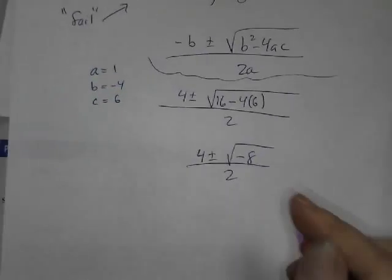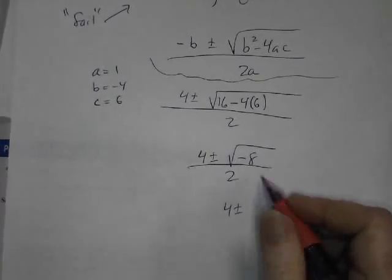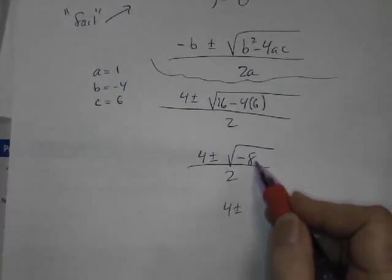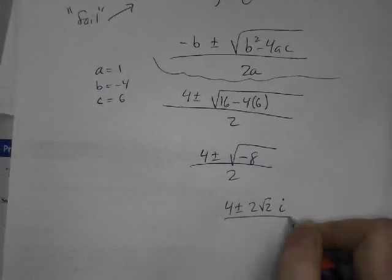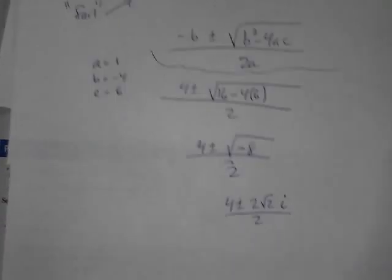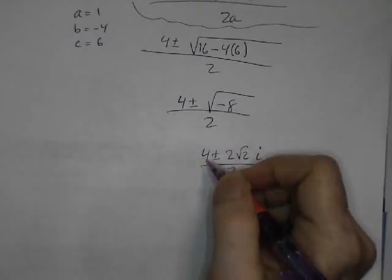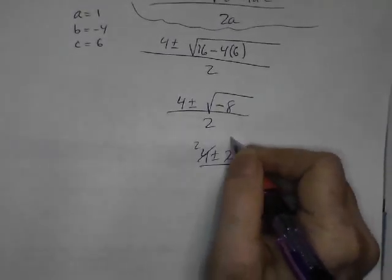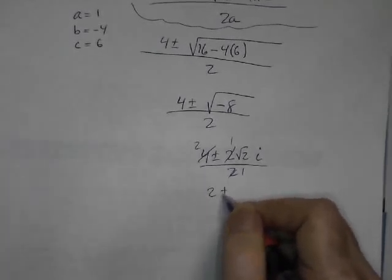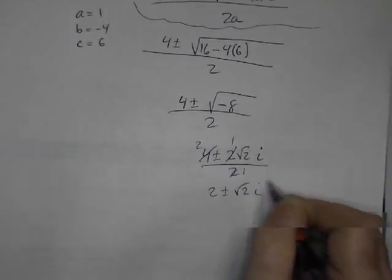Now, negative 8, you know that this is going to be... 8 can be written as 2 root 2, but it's going to have an i all over 2, and then we're going to reduce it, and 2, 1, 1, and then you get 2 plus or minus root 2i.